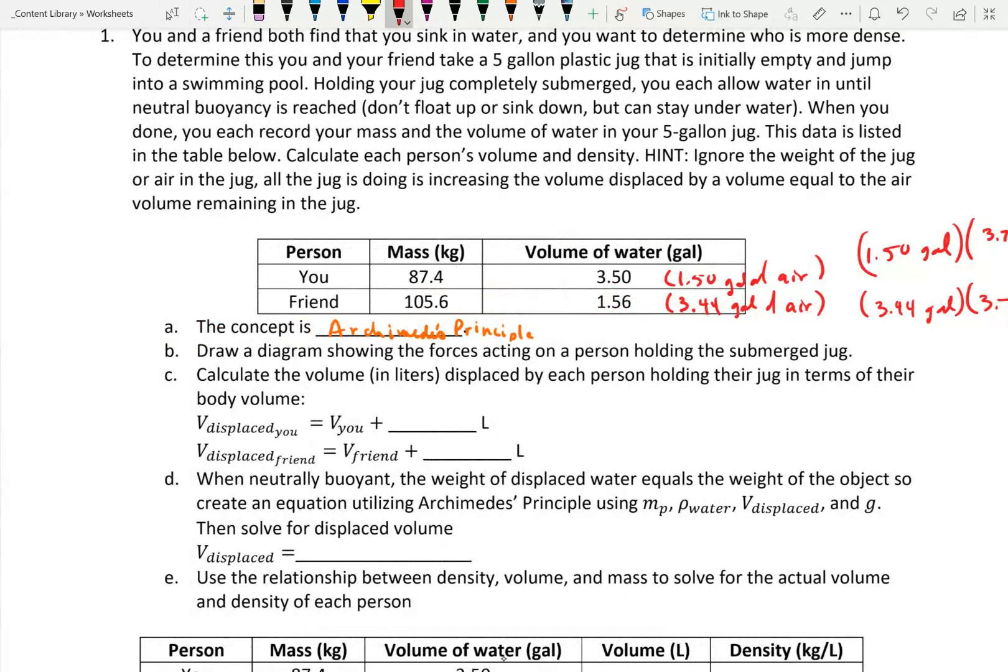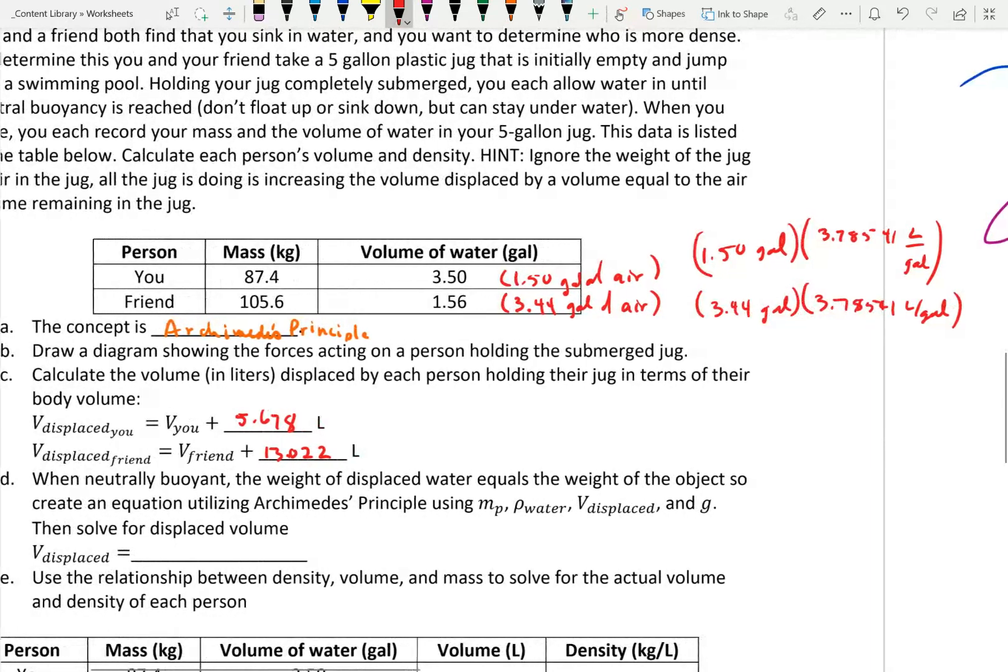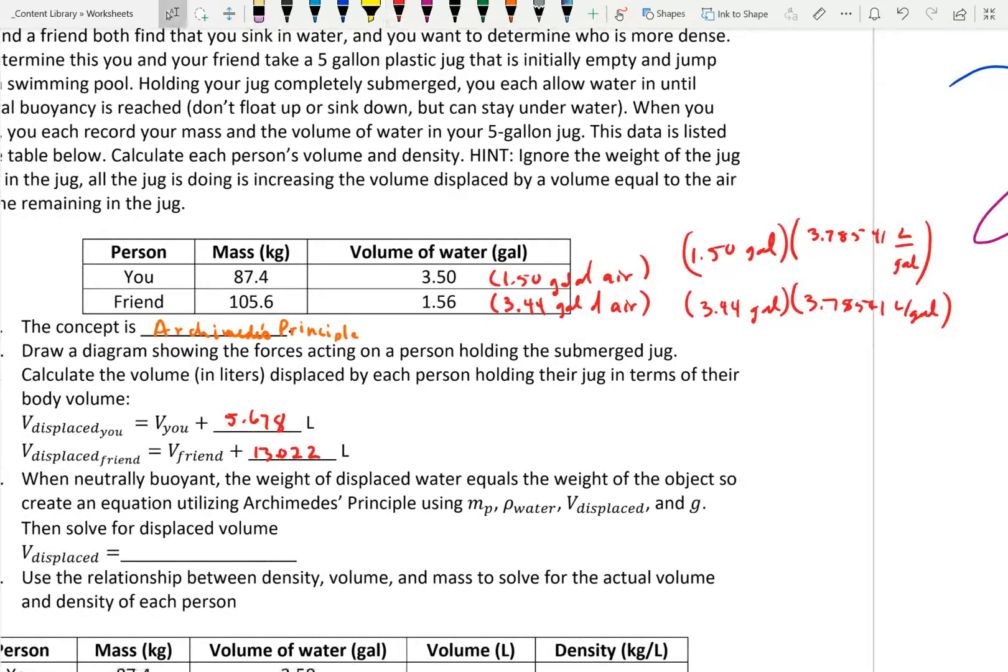So we want to convert these gallons of air into liters. 1.50 gallons of air times 3.78541 liters per gallon. For your friend, that's 3.44 gallons of air times 3.78541 liters per gallon. So the volume displaced by you is the volume of you plus 5.678 liters. And for your friend, it's their volume plus 13.022 liters.